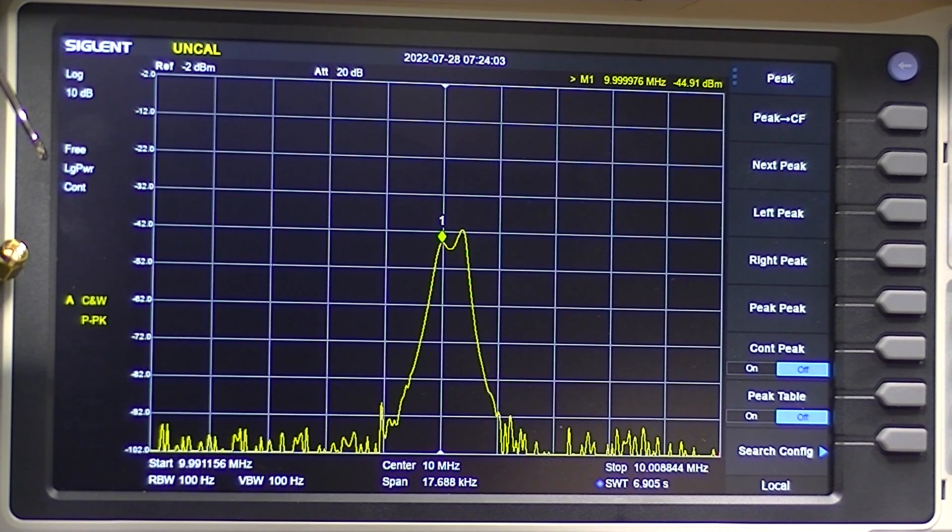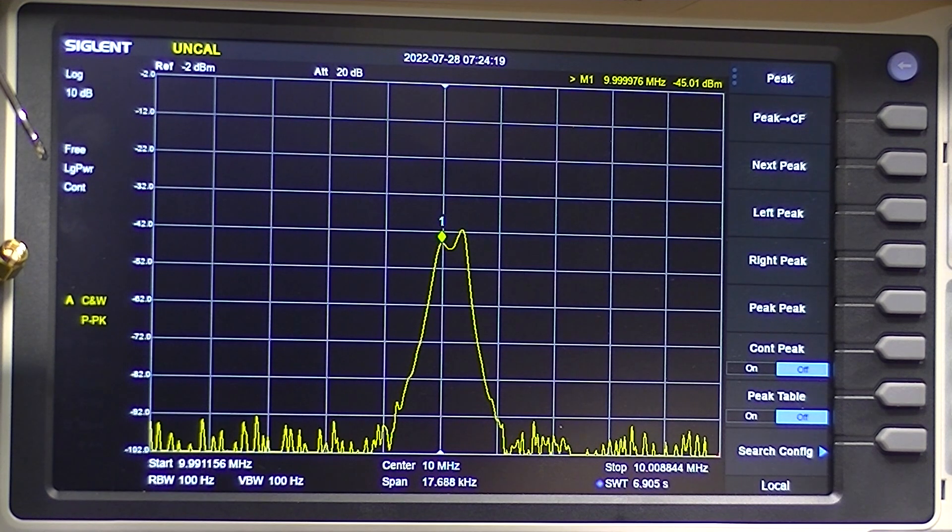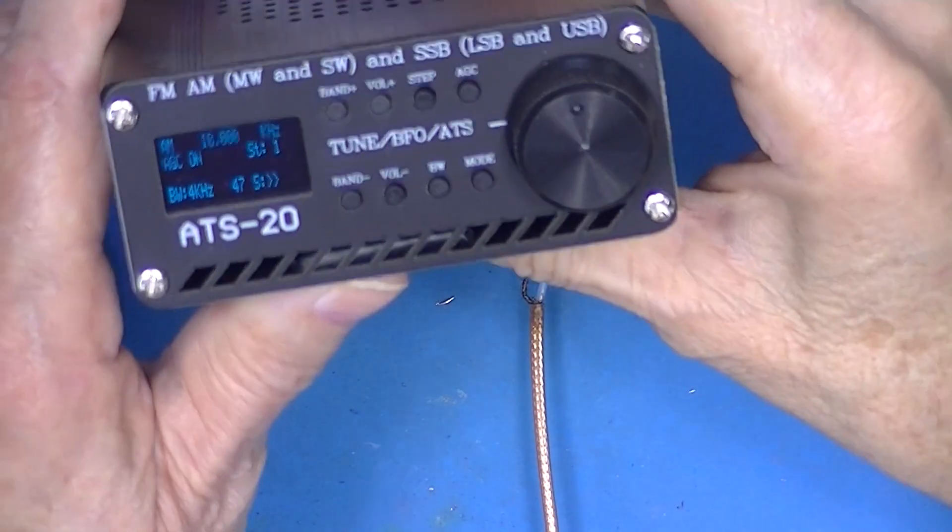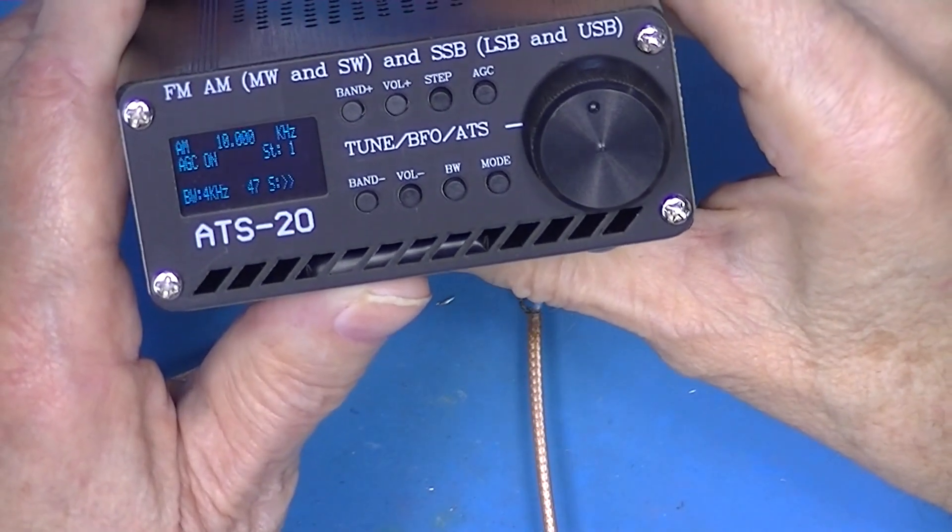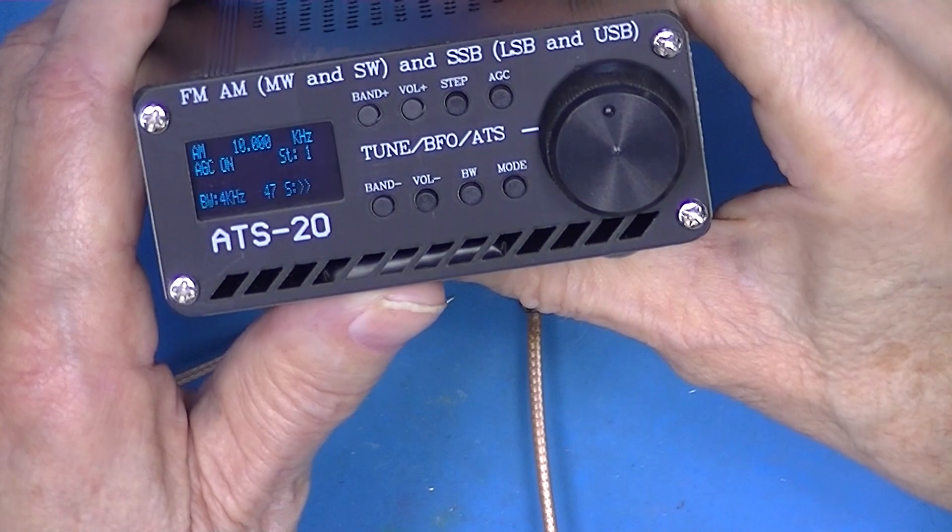It's about 7 o'clock here in Pennsylvania. And here in the background, it's a very noisy WWV signal on 10 MHz. So that's a WWV signal at 10 MHz.